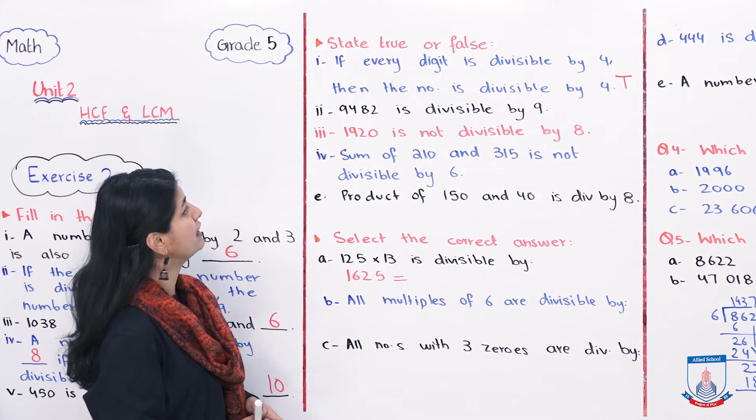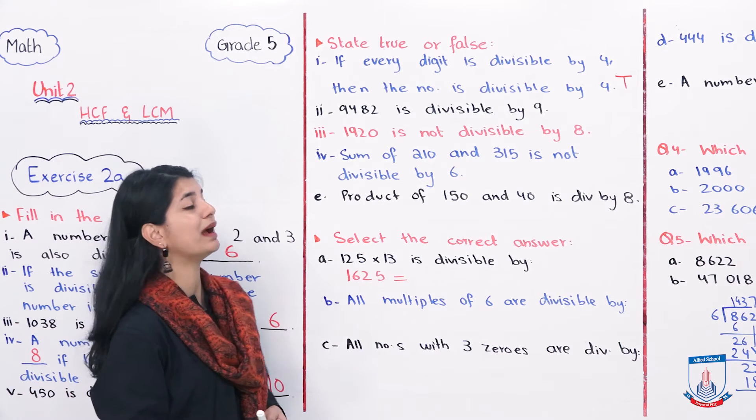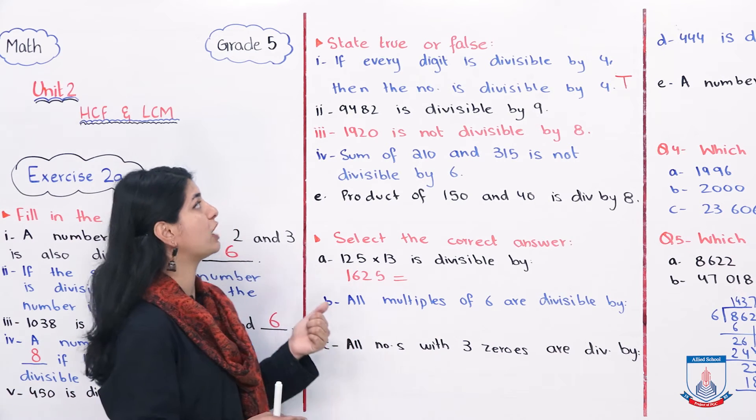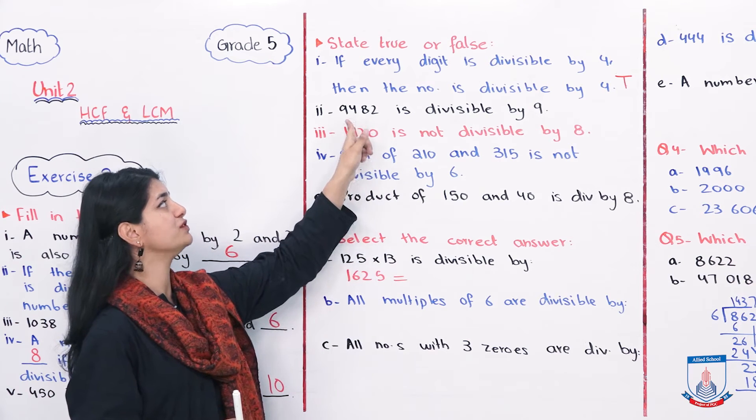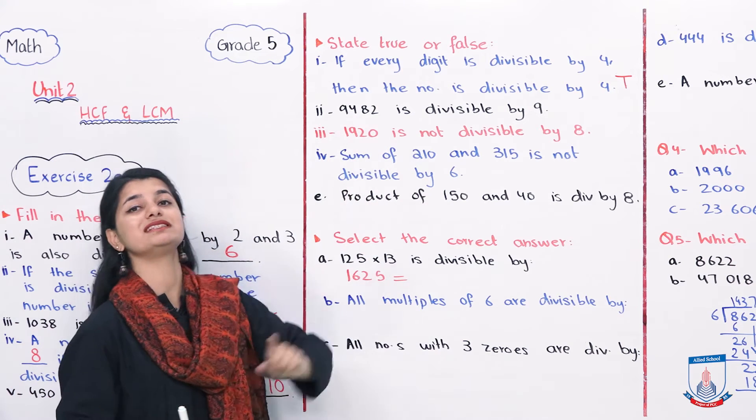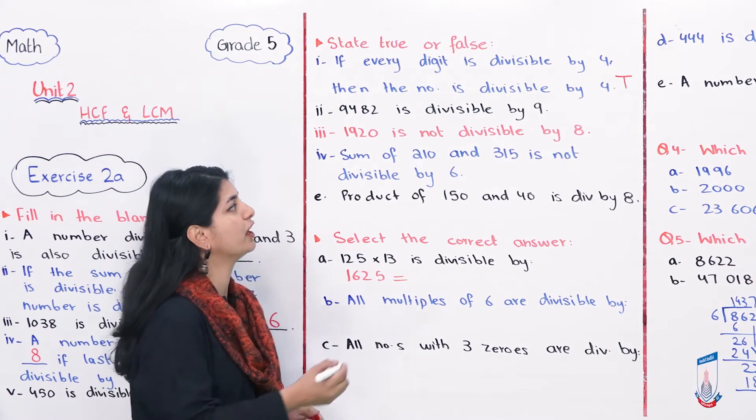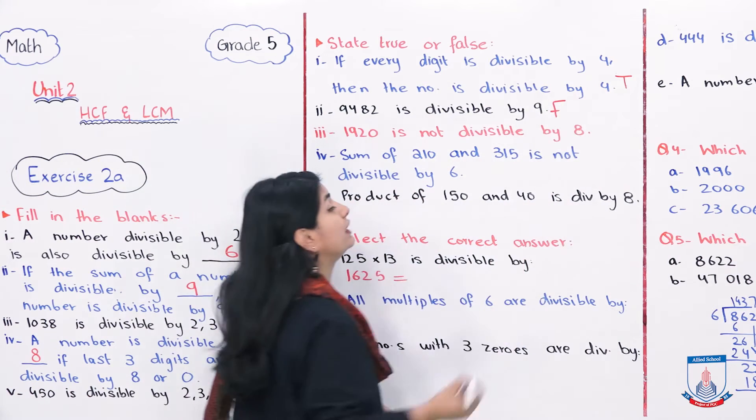Then we have: 9482 is divisible by 9. For the divisibility test of 9, you add the numbers: 9 plus 4 is 13, 8 plus 2 is 10, total 23. And this will be false because it is not divisible by 9.